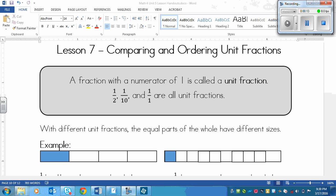So that means that if the top number is 1 in a fraction, then it is a unit fraction. Here are three examples. So 1 over 2 is a unit fraction. 1 over 10 is a unit fraction. And 1 over 1 is a unit fraction.